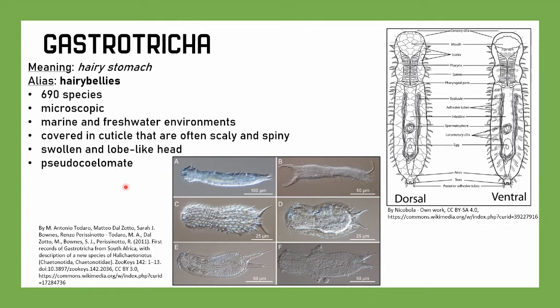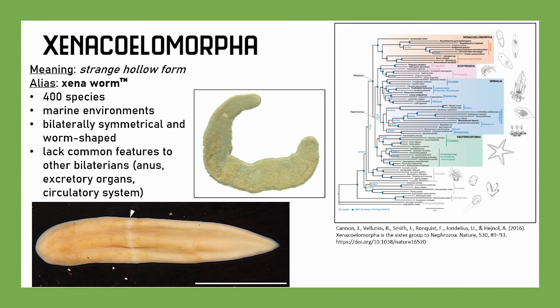Getting to the really weird stuff: we have Xenacoelomorpha. It means 'strange hollow form.' They don't really have a common name, so I'm going to coin one — these are the xenoworms. There are 400 species in marine environments. They're bilaterally symmetrical and worm-shaped, but really lack a lot of features common in other bilateral phyla — no anus, no excretory system, no circulatory system. They seem to split off from Bilateria near the base of the bilaterians.